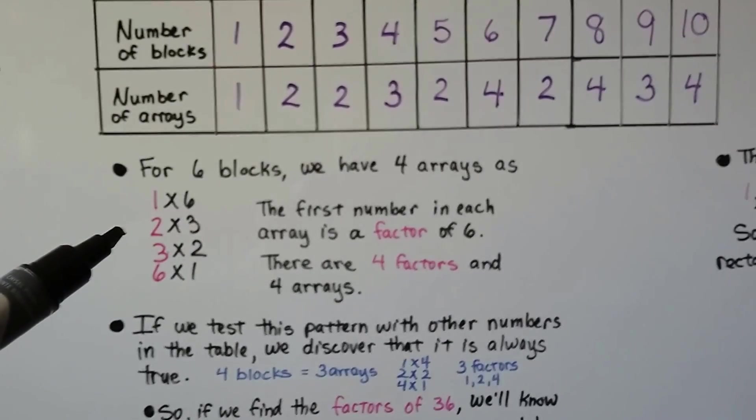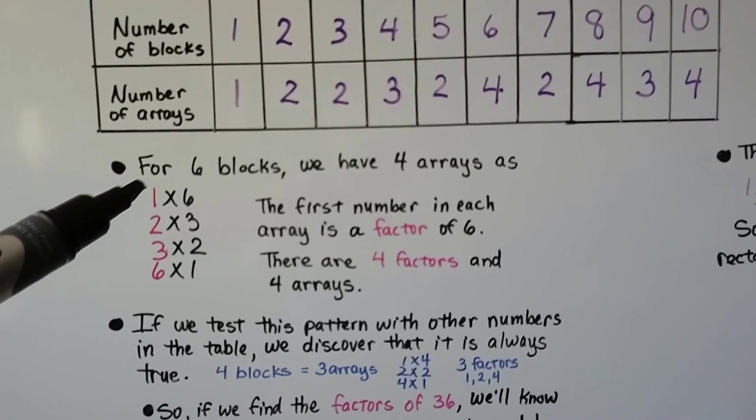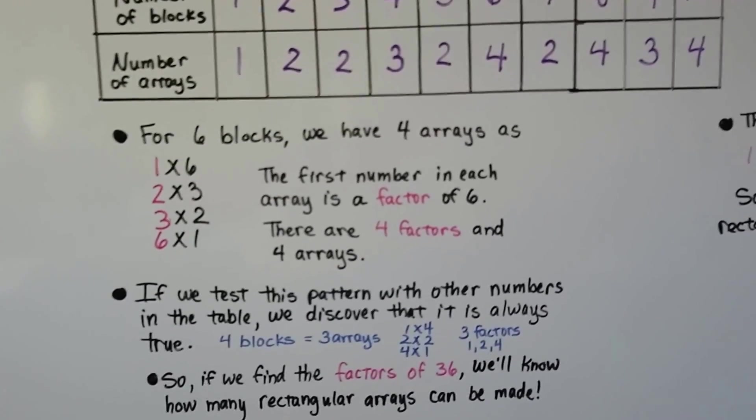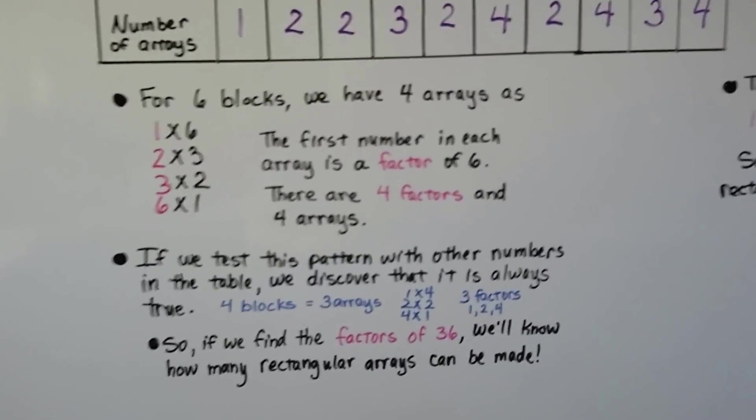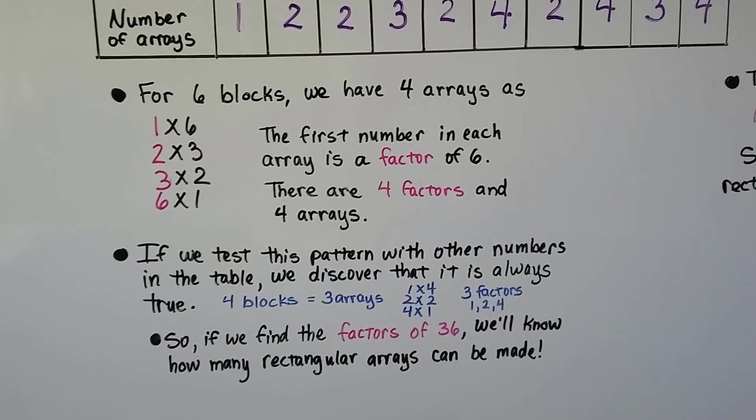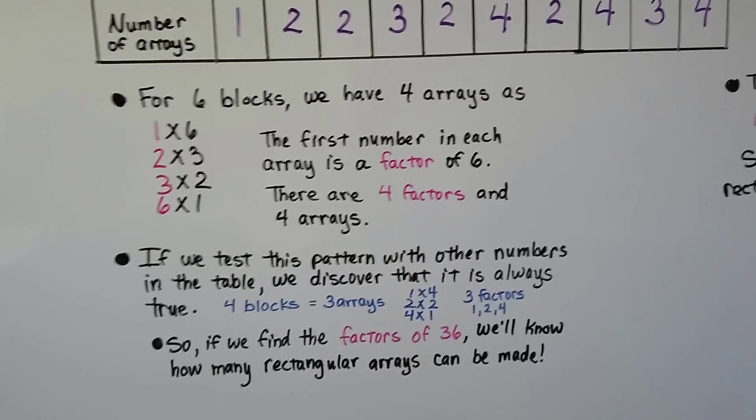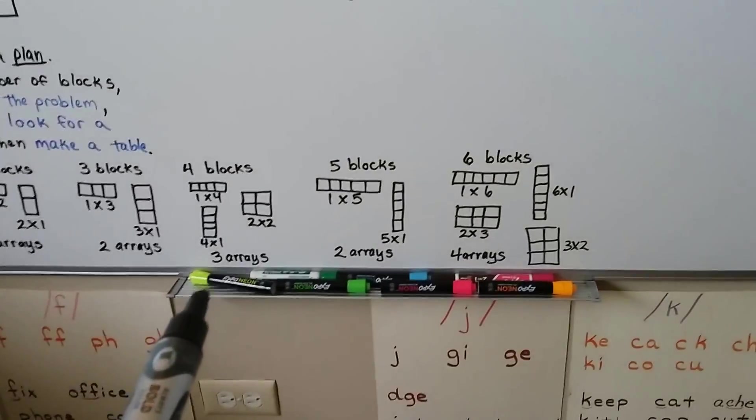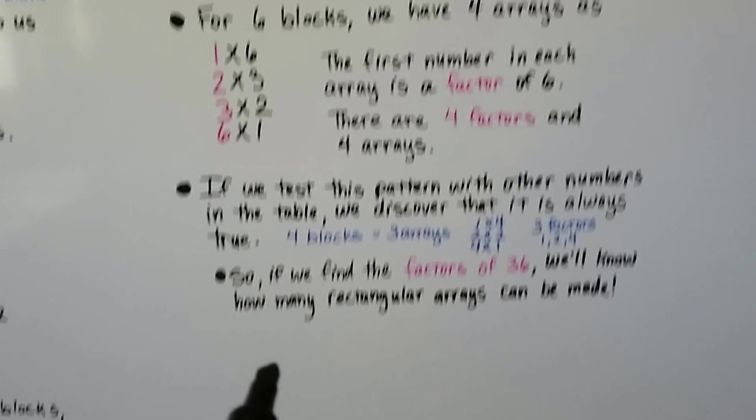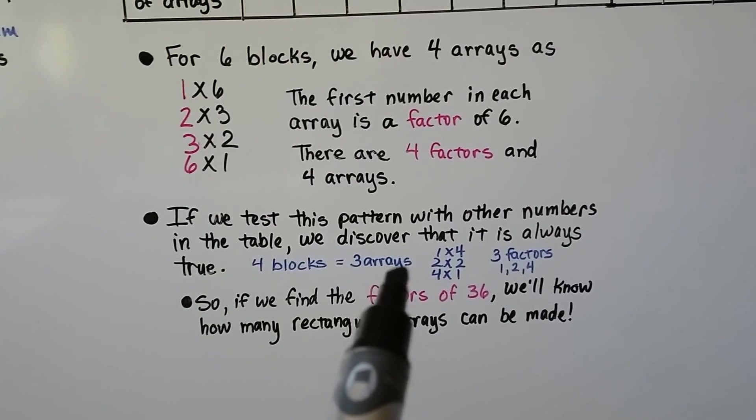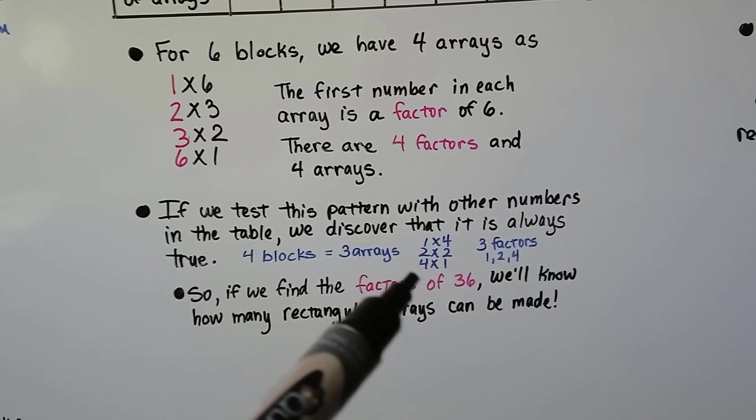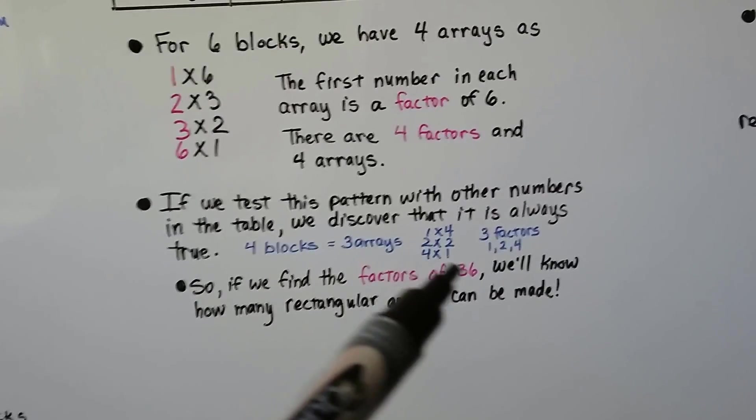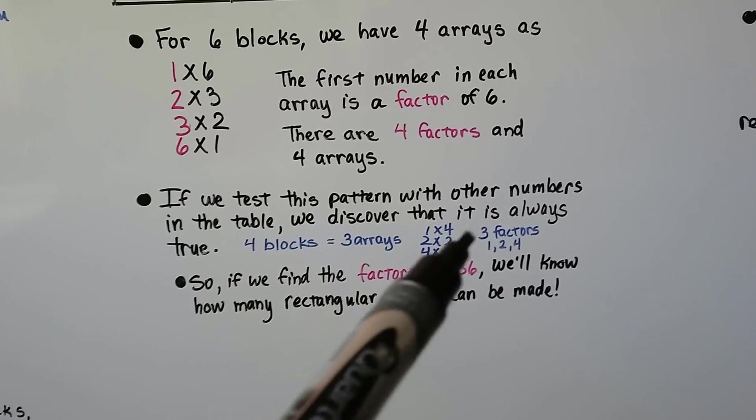Well, the first number in each array is a factor of 6. We've got a 1, 2, 3, 6. There's 4 factors and 4 arrays. If we test this pattern with other numbers in the table, we'll discover that it is always true. When we had 4 blocks, we had 3 arrays. We had a 1 by 4, a 2 by 2, and a 4 by 1. We had 3 factors, a 1, a 2, and a 4. 3 arrays, 3 factors.